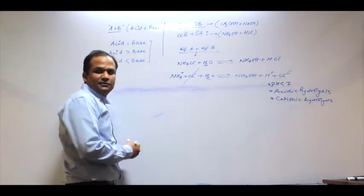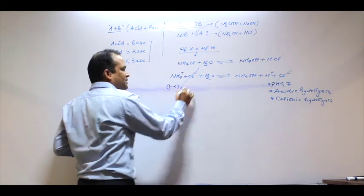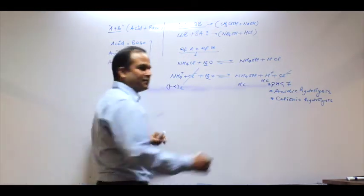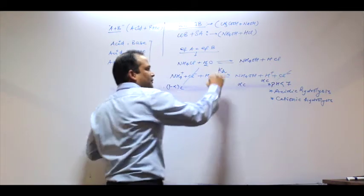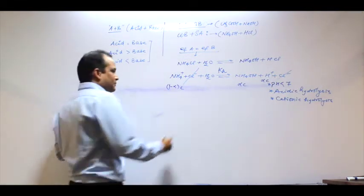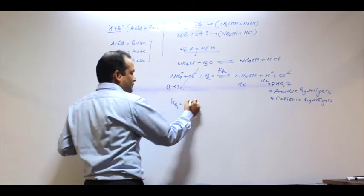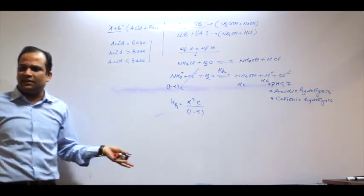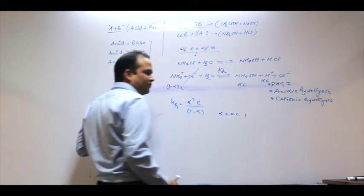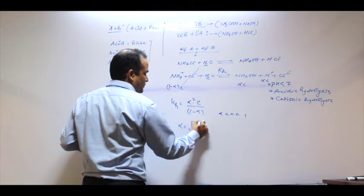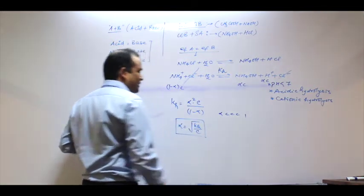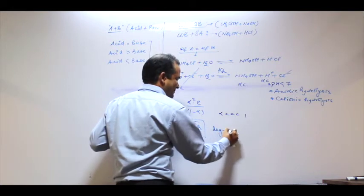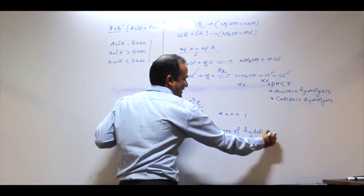Let alpha·c be the degree of hydrolysis. The remaining is 1 minus alpha·c. Kh, the hydrolysis constant, equals alpha·c times alpha·c upon 1 minus alpha·c. Since alpha is very very less than 1, we simplify. Alpha is the degree of hydrolysis.